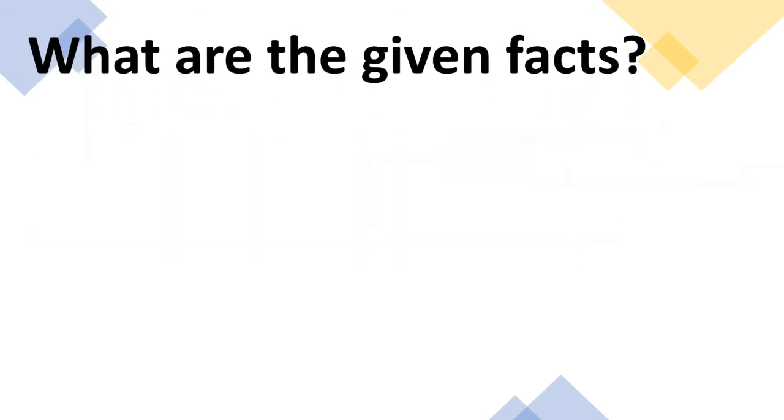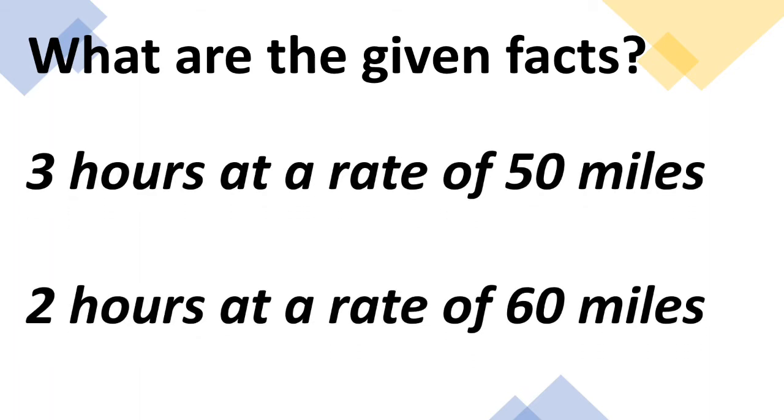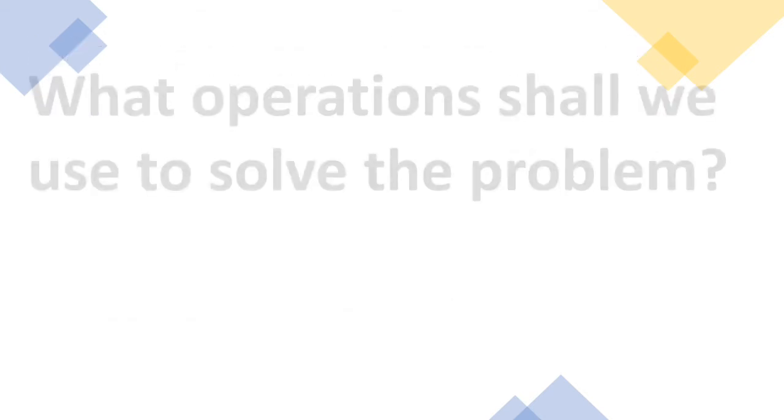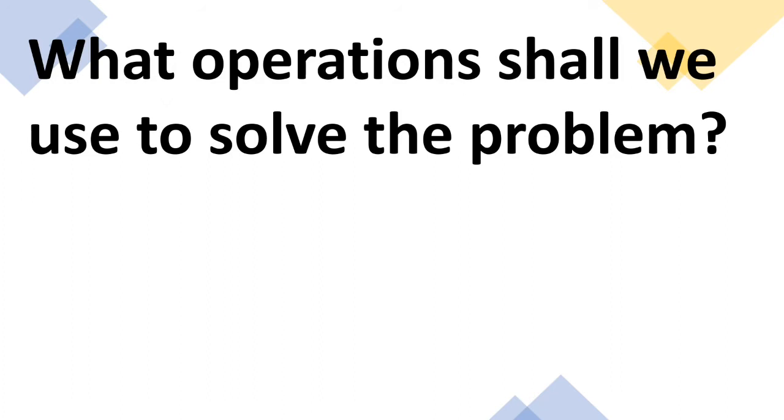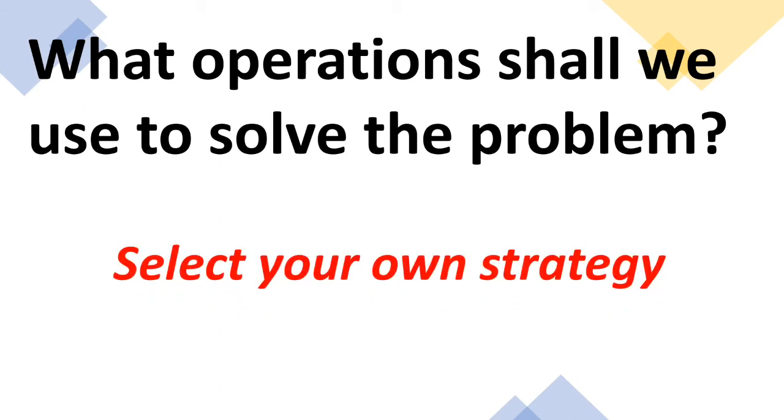What are the given facts? The given facts are: we have three hours at a rate of 50 miles and two hours at a rate of 60 miles. Remember those facts already. Okay, now what operation shall we use to solve the problem? Now you can use or select your own strategy.